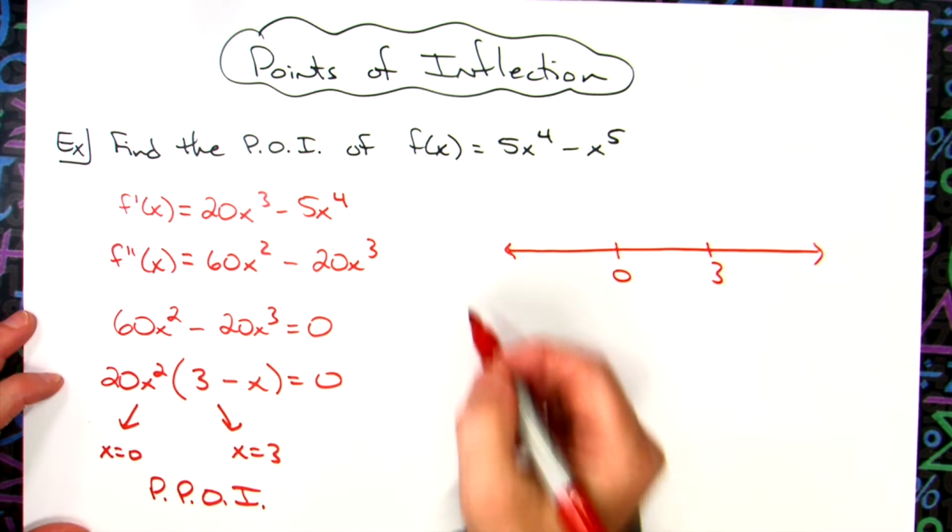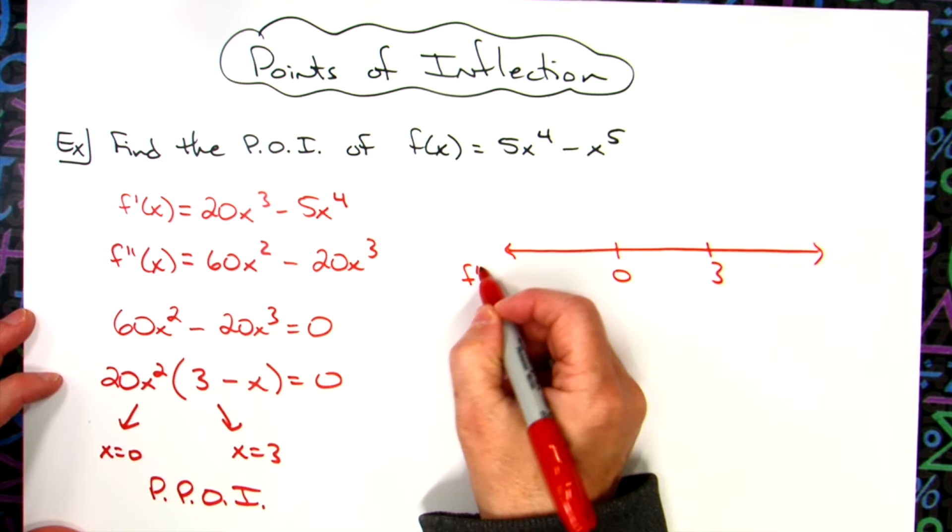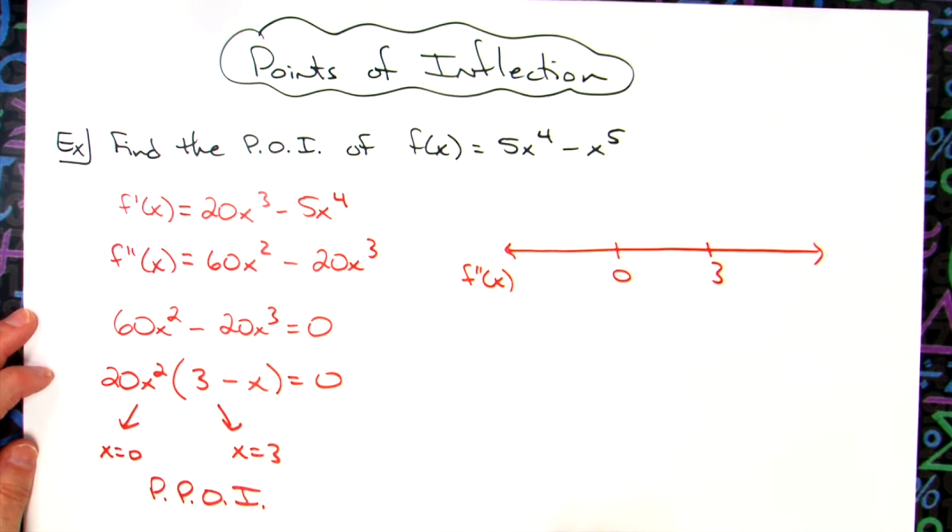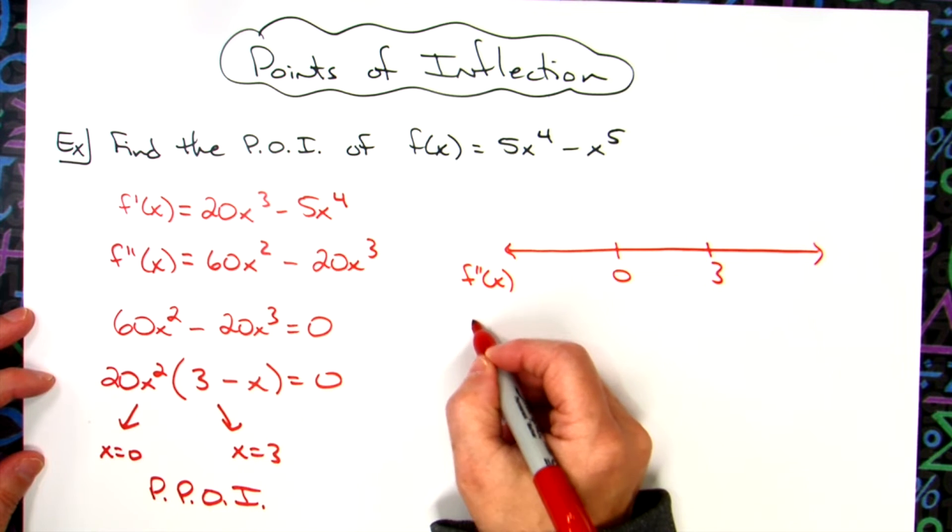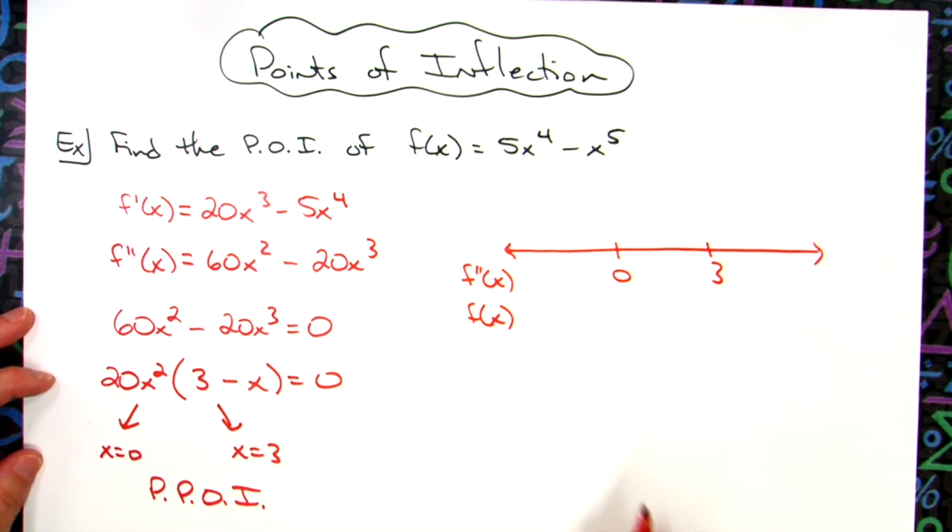What we're going to do is test in that second derivative and find out whether it is positive or negative, and then that will determine what the original function is doing as far as concave up or concave down, and that's going to determine which one is going to be our points of inflection when we have a change there.